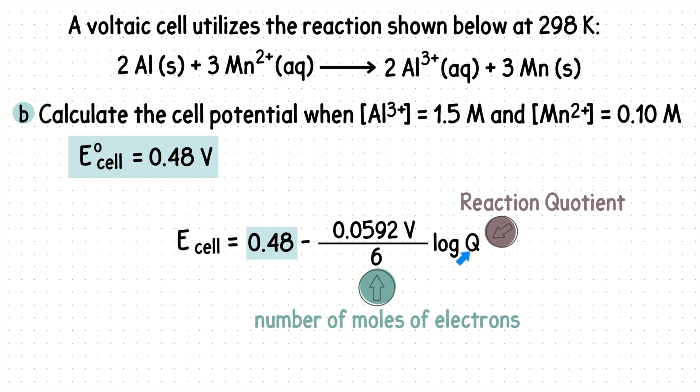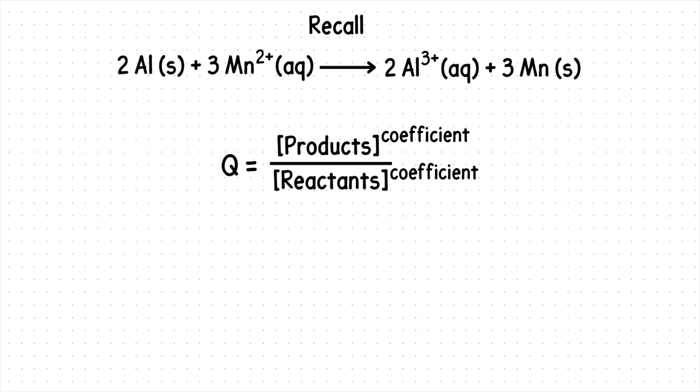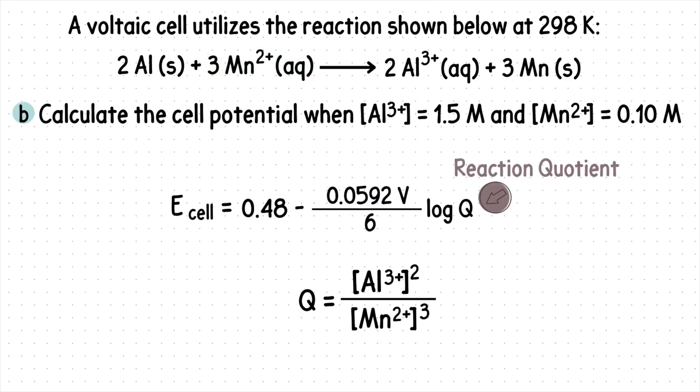We can now find Q. Recall that in a reaction quotient we do not include liquids or solids, so we will only have this product on top, and it's raised to a power of 2 since our coefficient is 2. This reactant goes on the bottom, and it's raised by a power of 3 since our coefficient is 3. We can now plug in the molarities that were given in the question. Plug in 1.5 here, and 0.10 here. Square the top, cube the bottom, then divide. We have our value for Q.